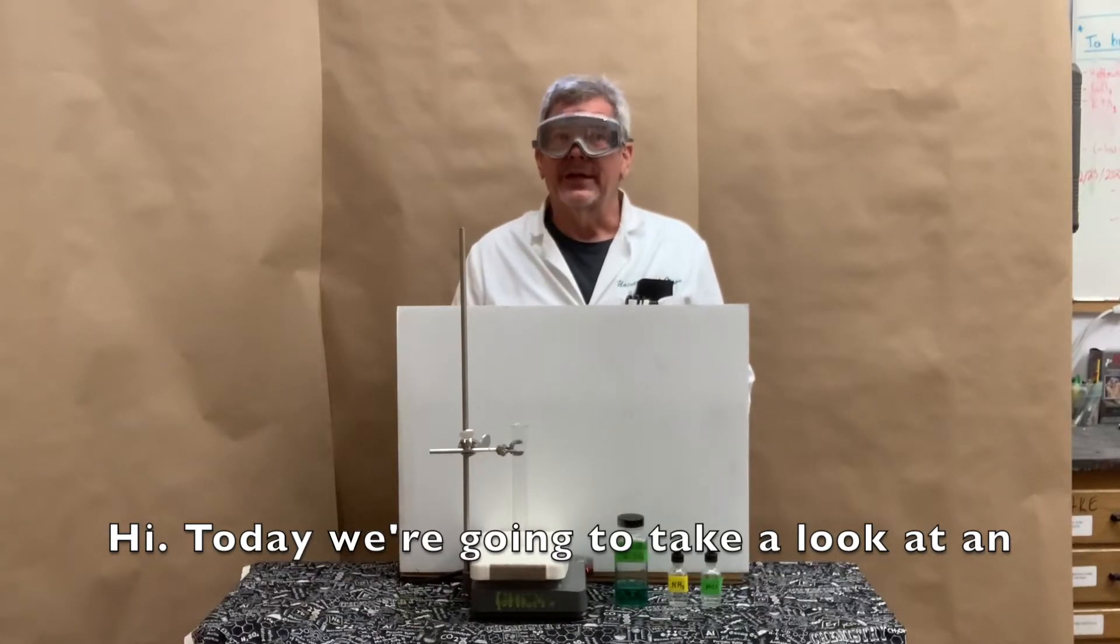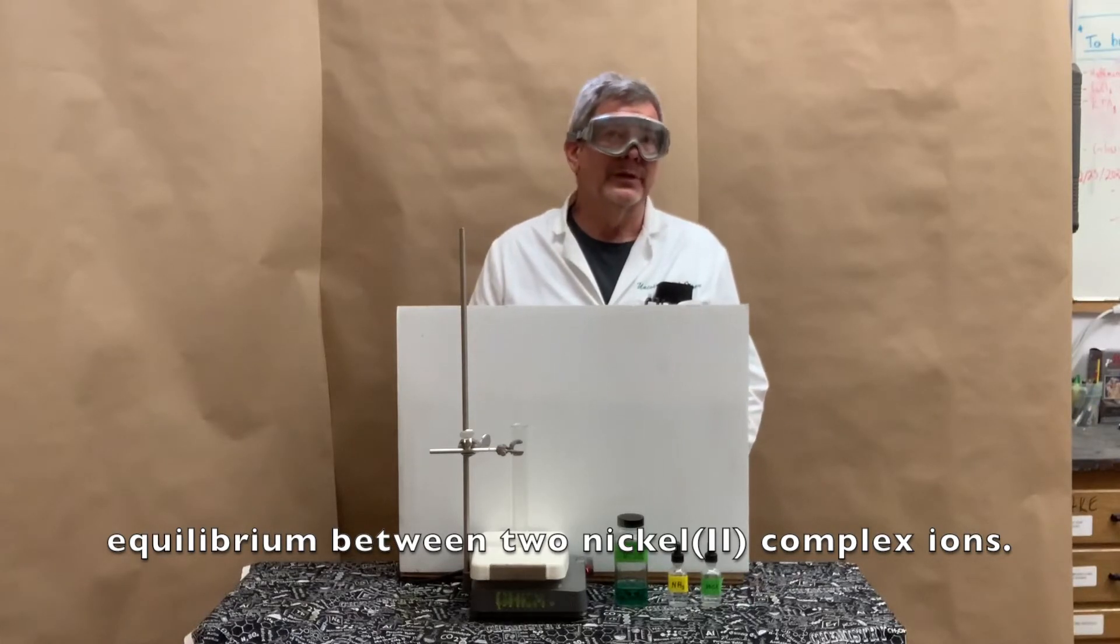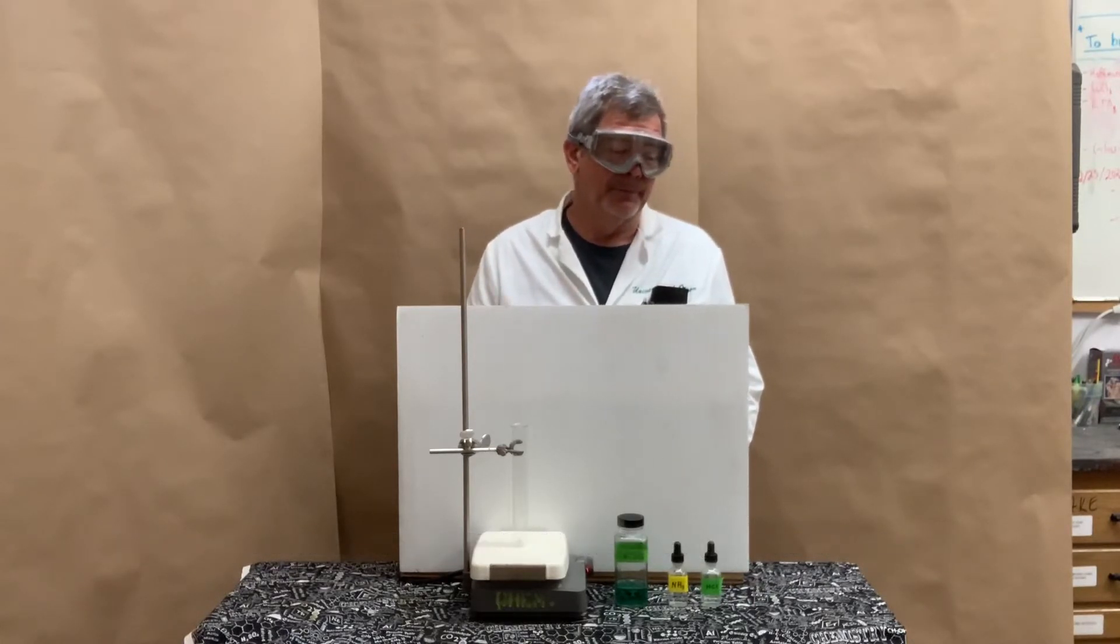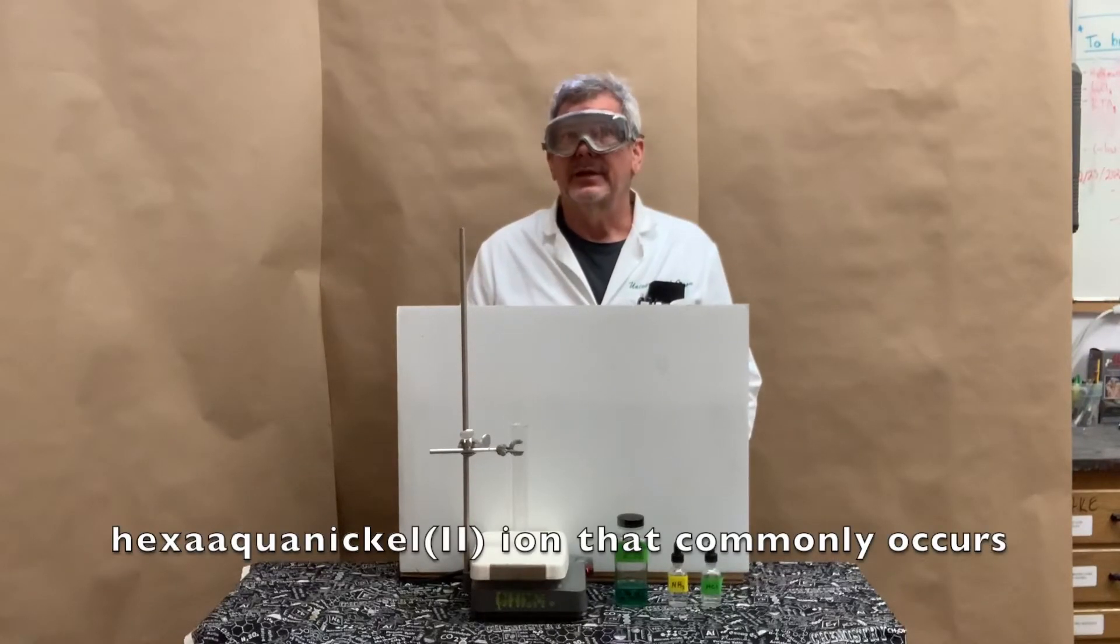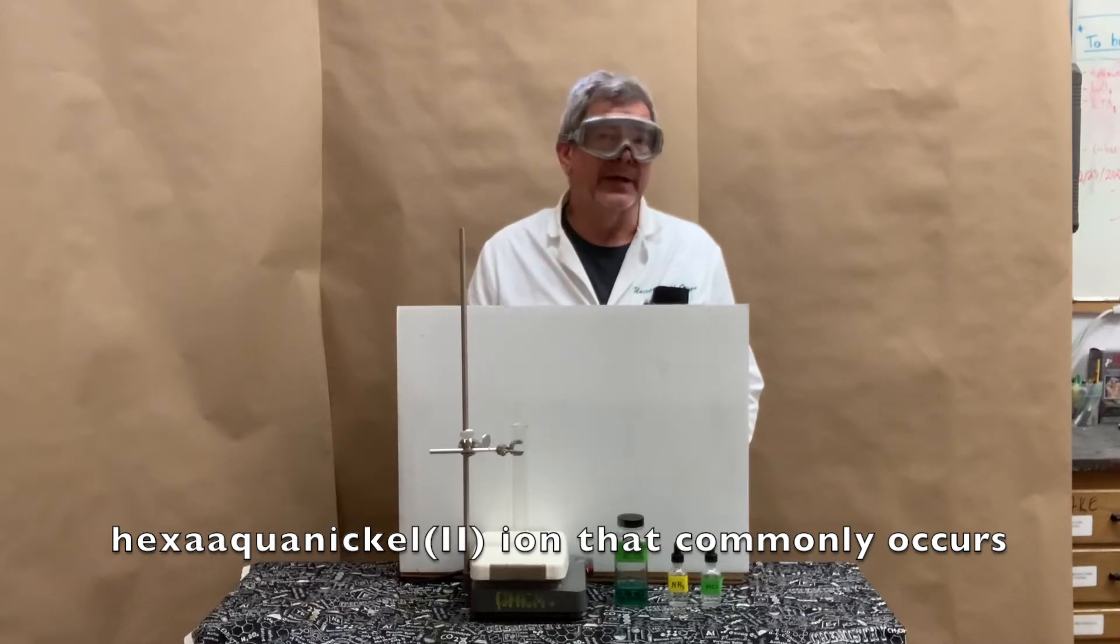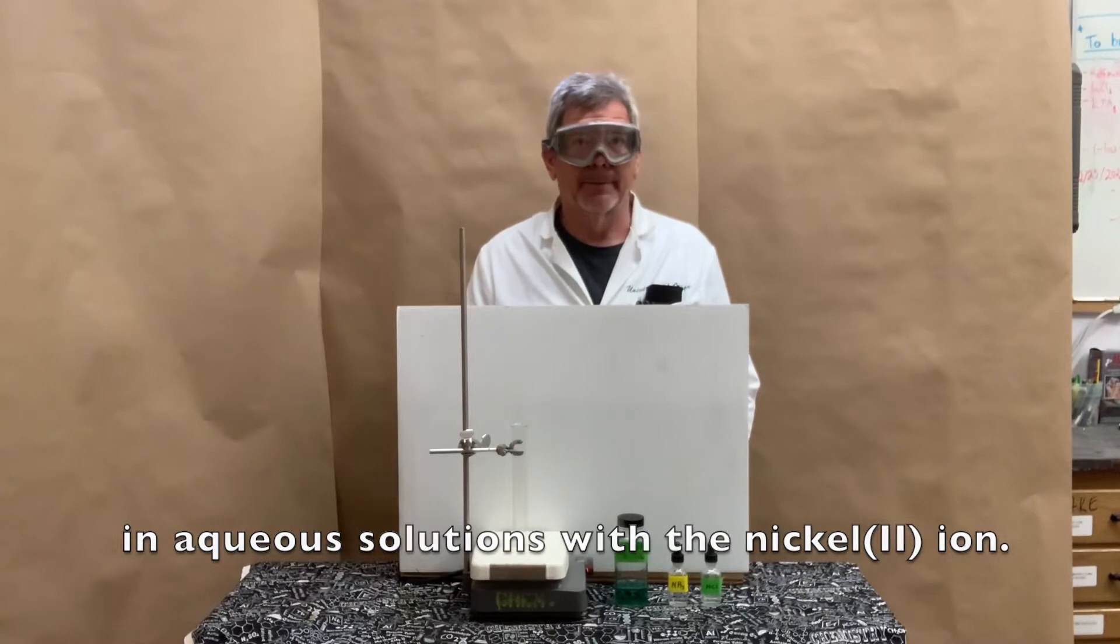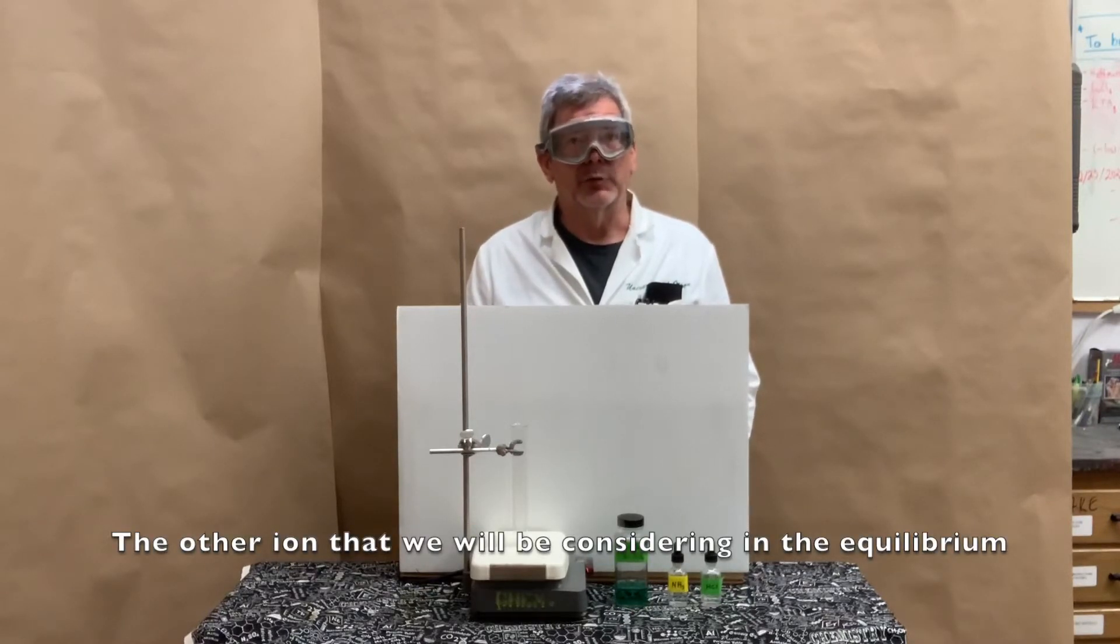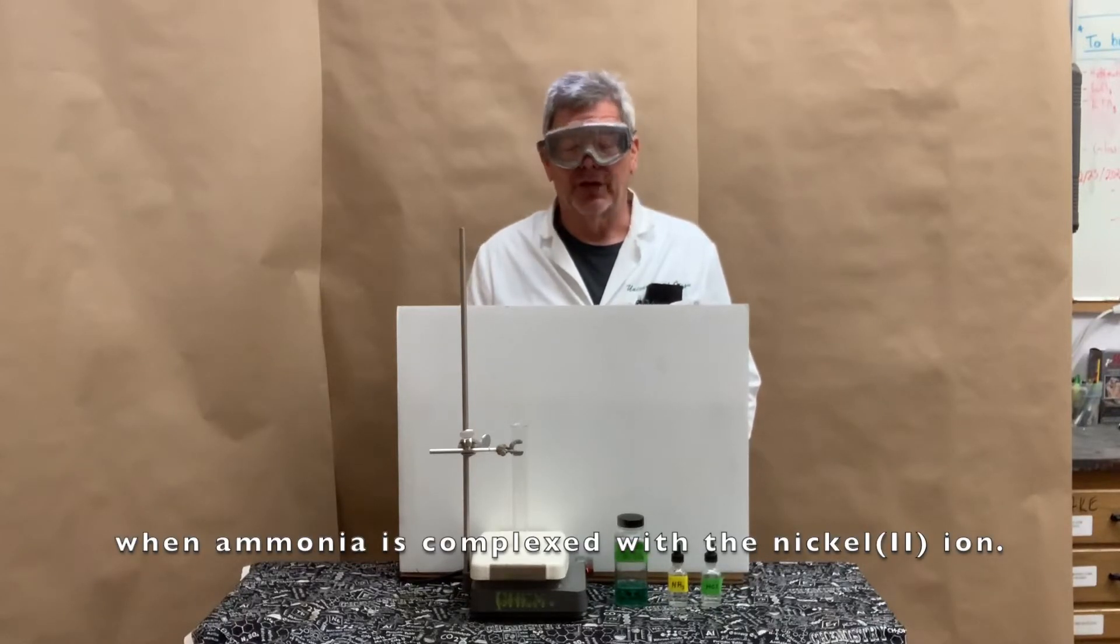Hi, today we're going to take a look at an equilibrium between two nickel(II) complex ions. One of the complex ions we'll be considering is the hexa-aqua nickel(II) ion that commonly occurs in aqueous solutions of the nickel(II) ion. The other ion that we'll be considering in the equilibrium is the hexamine nickel(II) complex ion that forms when ammonia complexes with the nickel(II) ion.